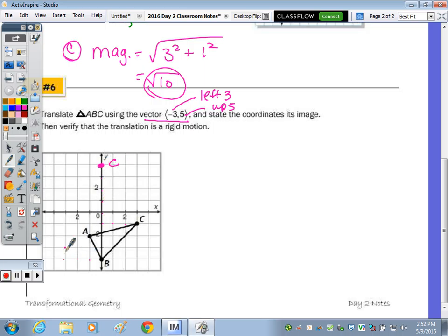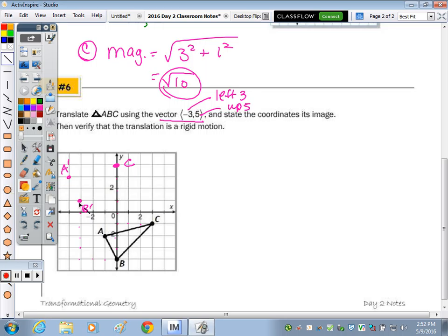Left 1, 2, 3, up 1, 2, 3, 4, 5. And note 2, from A to B, you go up 1, 2, left 1. So if this is B prime, up 2, left 1 is A prime.